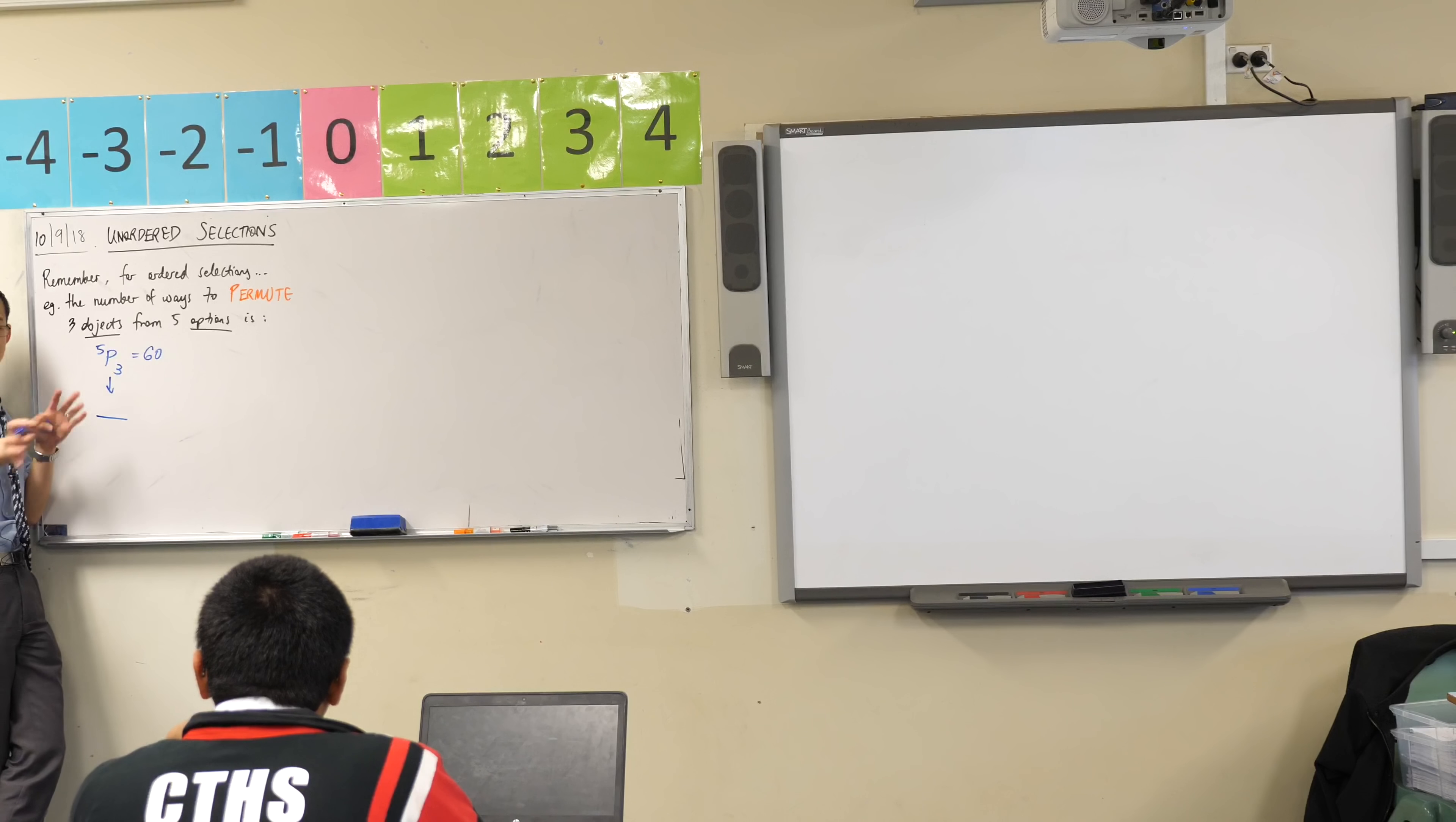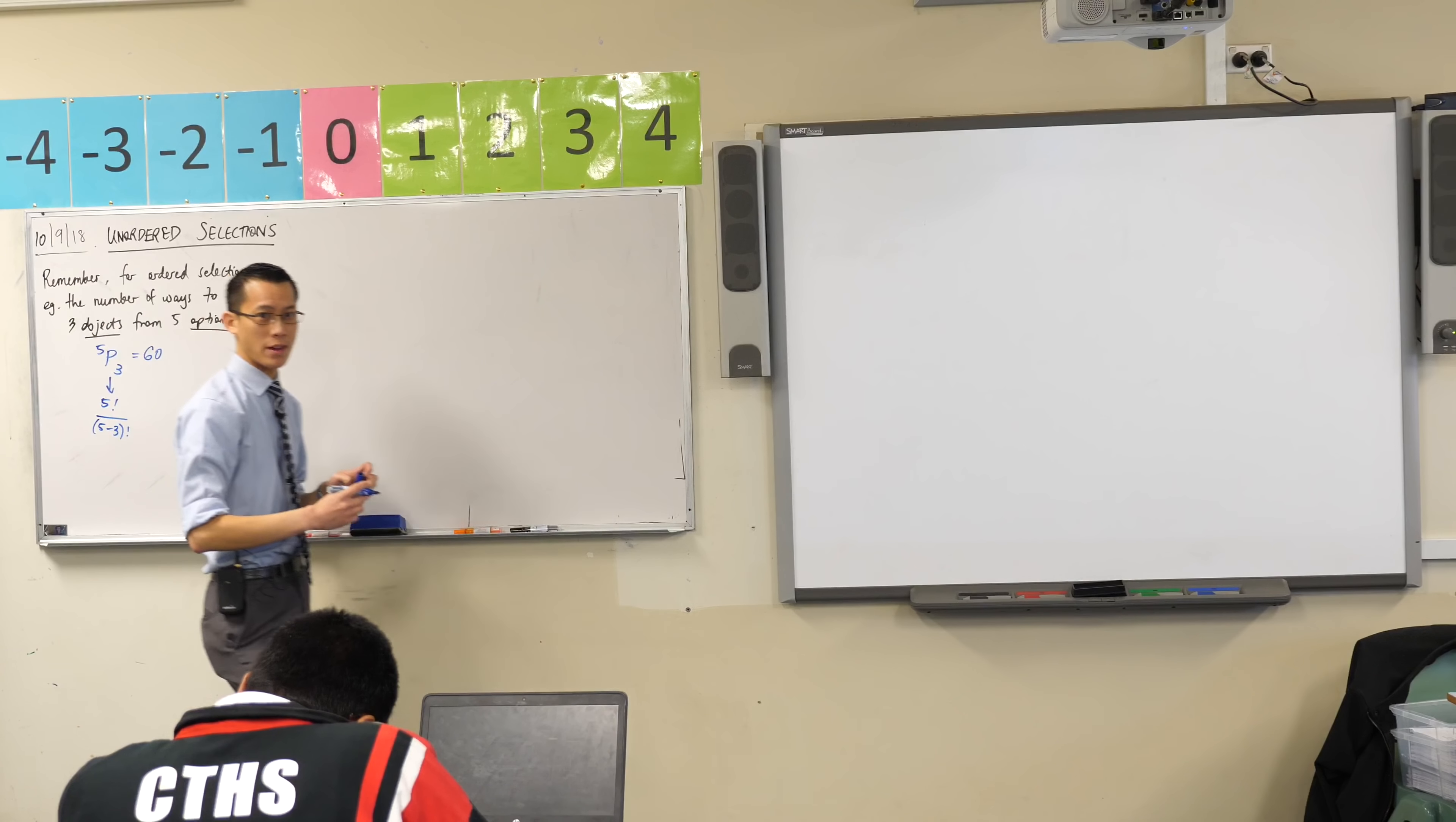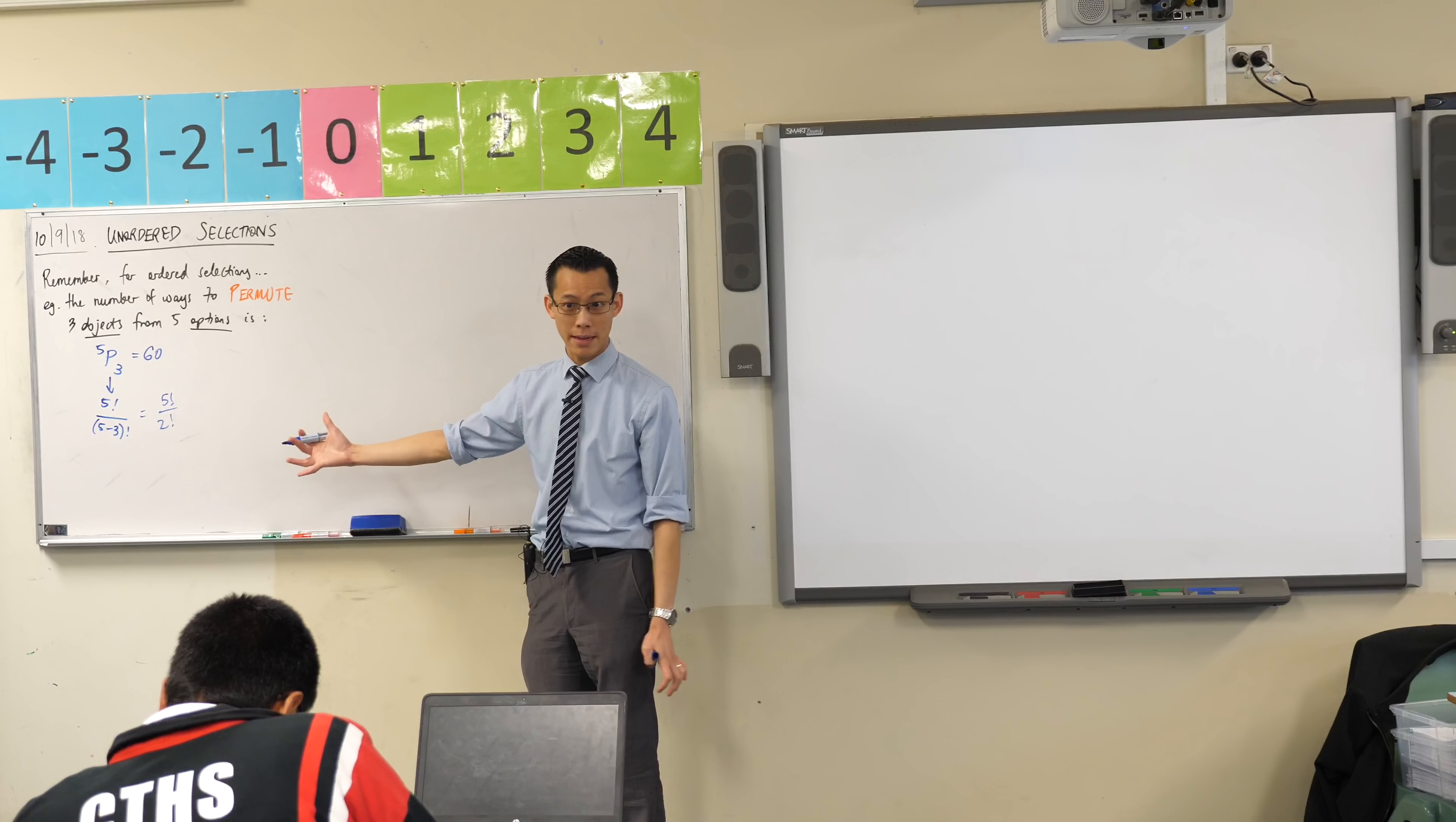Very good. So in this case, in this example, this is going to be 5 factorial on the top. And on the bottom, yeah, this is going to be 5 take away 3 factorial, right? So this is equal to 5 factorial on 2 factorial. And this calls back the boxes that Arian was reminding us of, right? Why would we have 5 factorial divided by 2 factorial?